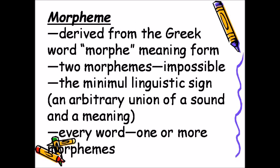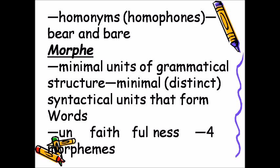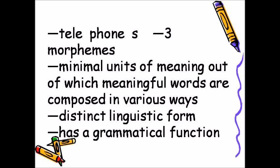Morpheme: derived from the Greek word 'morphe,' meaning 'form.' Two morphemes: 'impossible.' The morpheme is the minimal linguistic sign — an arbitrary union of a sound and a meaning. Every word contains one or more morphemes. Morphemes are the minimal units of grammatical structure — minimal, distinct syntactical units that form words. For example: 'unfaithfulness' has 4 morphemes; 'telephones' has 3 morphemes. They are minimal units of meaning out of which meaningful words are composed.